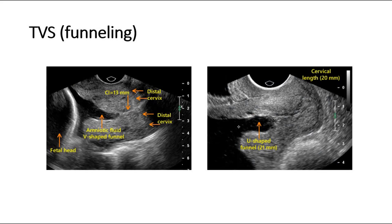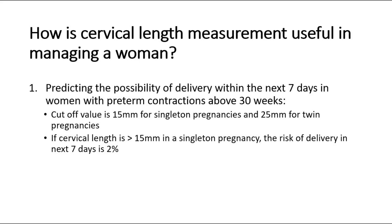Cervical length measurement is useful in several ways. First, it can predict the possibility of delivery within the next seven days in women with preterm contractions above 30 weeks. The cutoff value is 15mm for singleton pregnancies and 25mm for twin pregnancies. If cervical length is more than 15mm in a singleton pregnancy, the risk of delivery in the next seven days is only 2%.